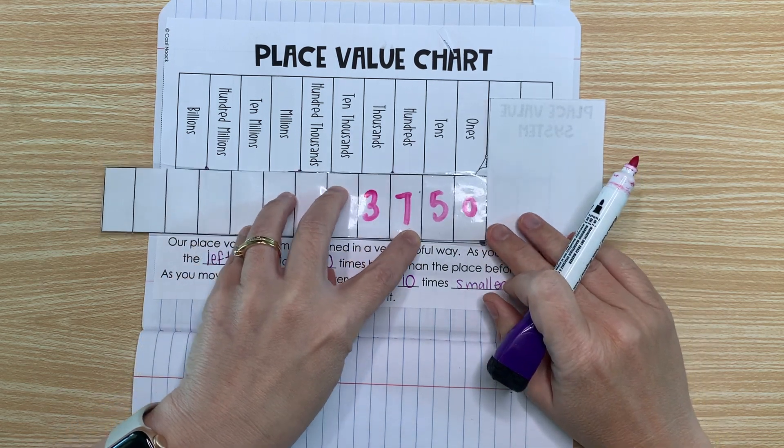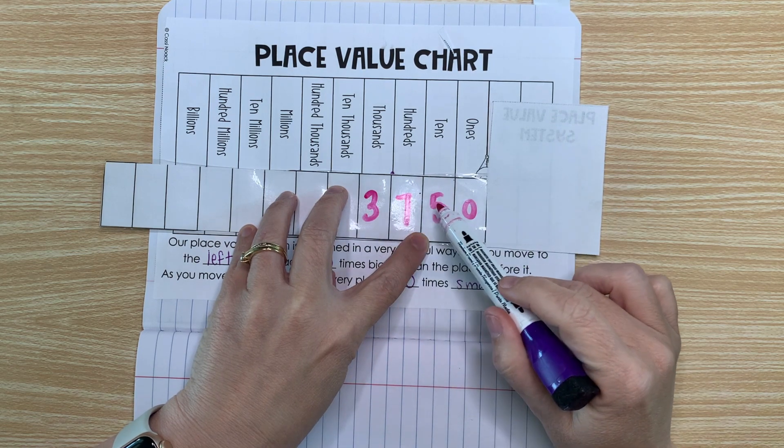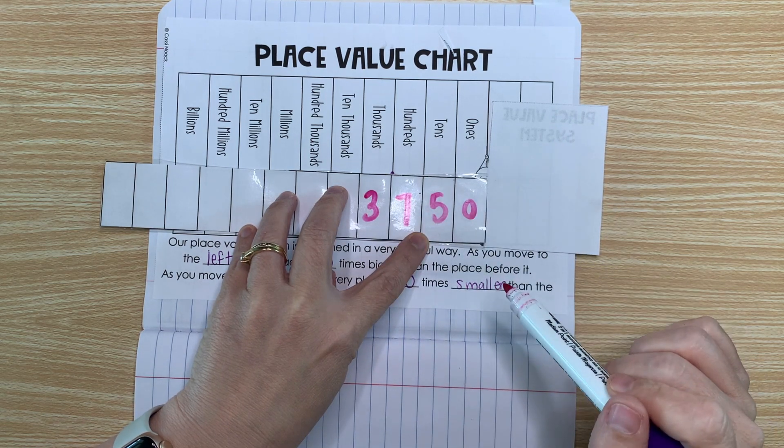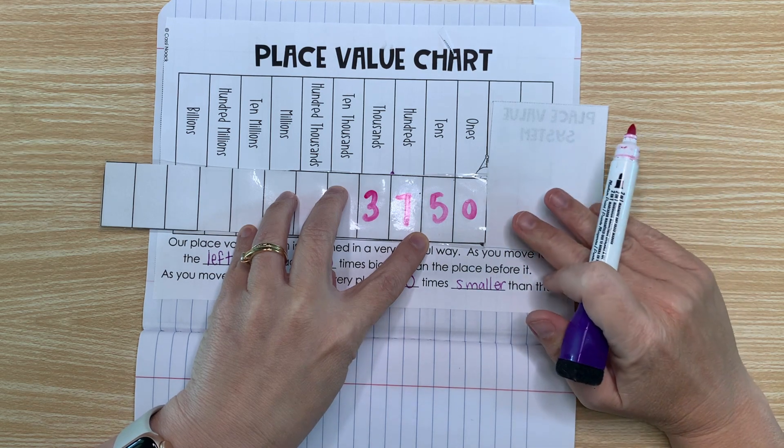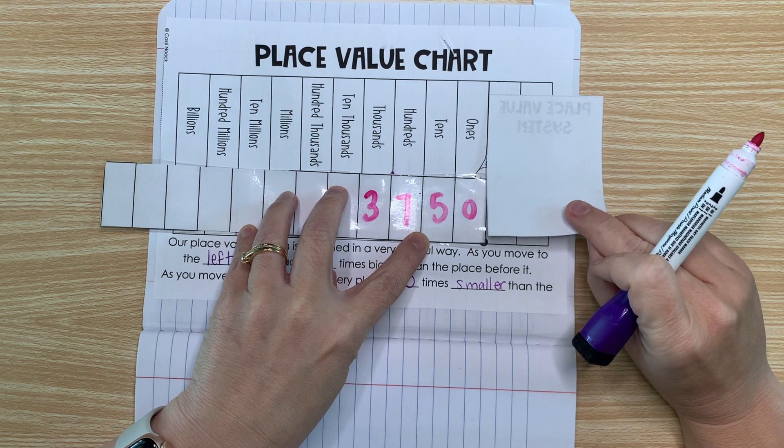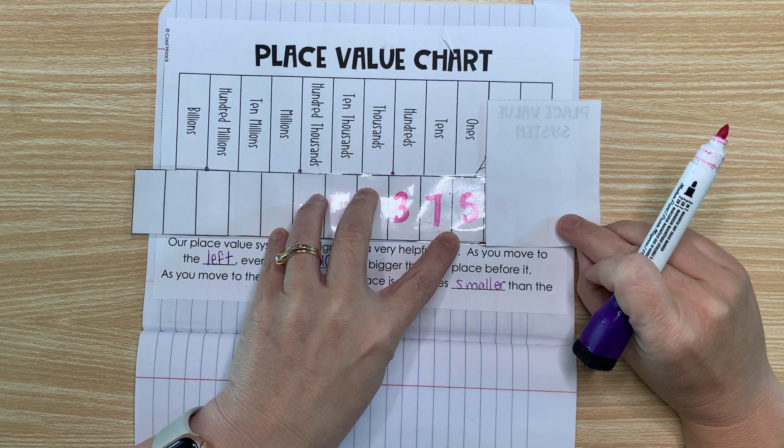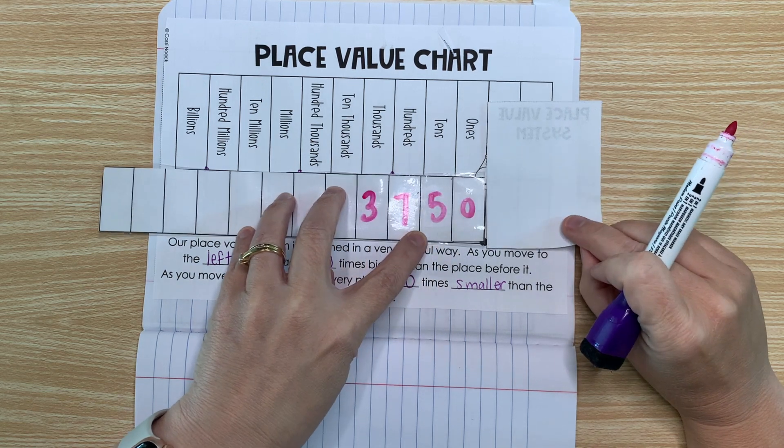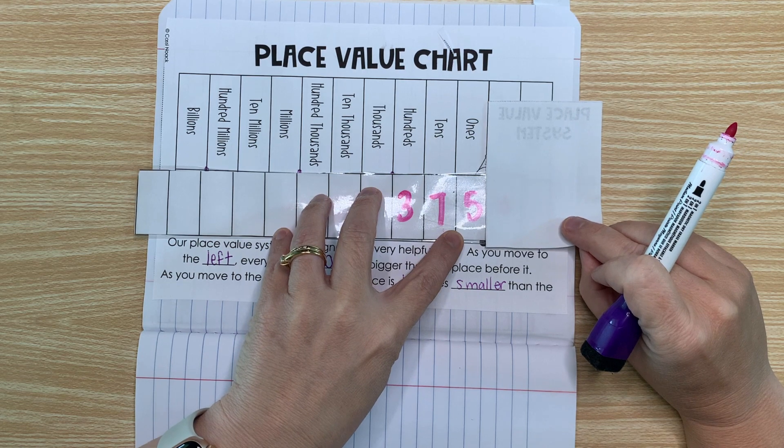But it works the other way too with division. So let's say I have the number 3,750 and I say, what is 3,750 divided by 10? Well, if I want to divide by 10, I can just slide it one place to the right. So 3,750 divided by 10 is 375.